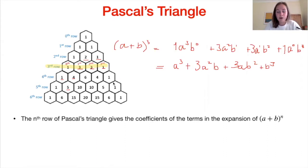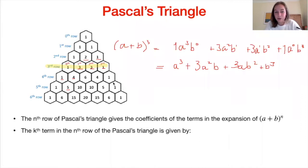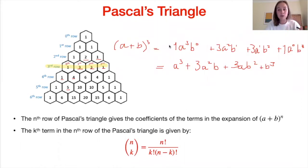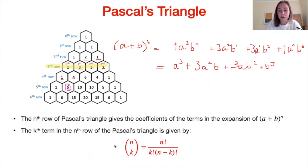Ideally we want something to tell us what the terms in Pascal's triangle are without having to write out all the rows. There is a solution: the kth term in the nth row of Pascal's triangle is given by the formula n choose k, which equals n factorial over k factorial times (n minus k) factorial. So let's look at how this works. Say we want to extract the first term of the fifth row. Because we start counting from zero, the first term is the number five.